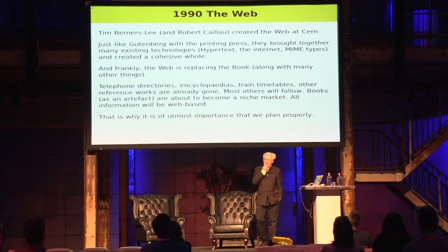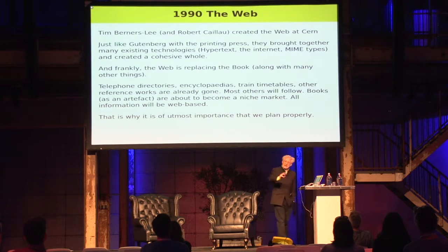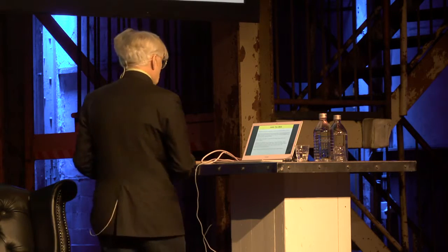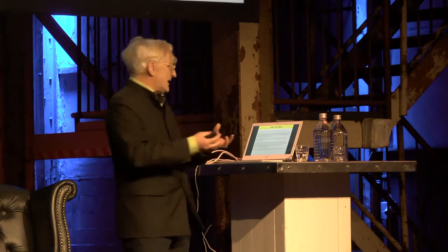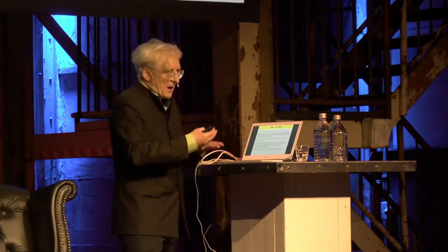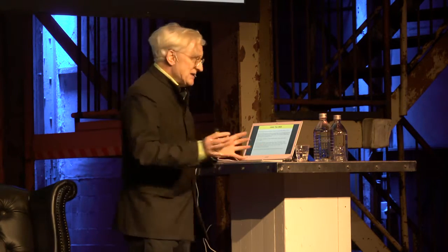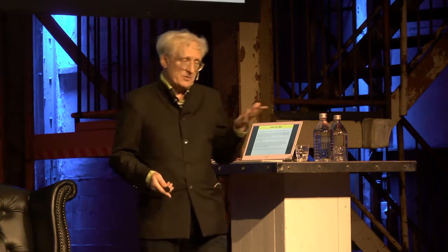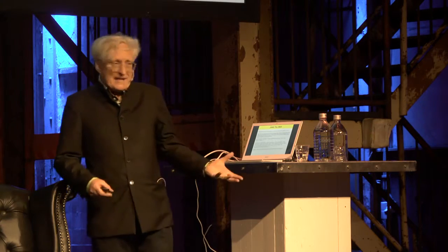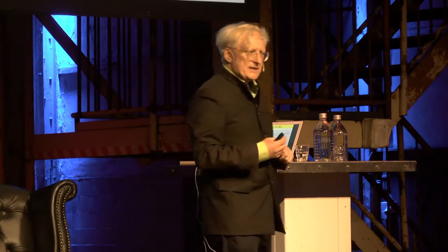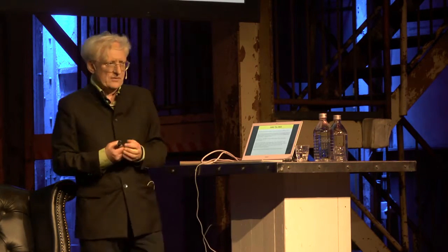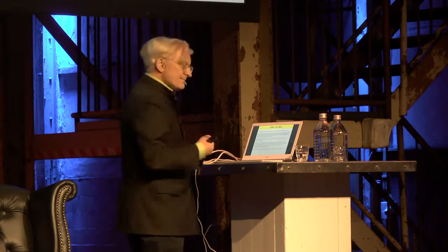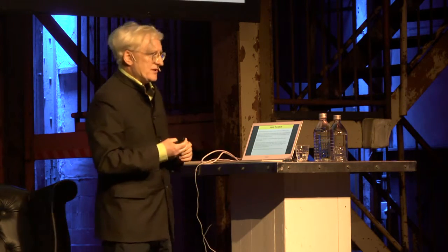In 1990, two years after the internet came to Europe, along came the web. Tim Berners-Lee at CERN — and Robert Caillou, who doesn't get as much press — the two of them built the web. Just like Gutenberg, they brought together lots of existing technologies: hypertext wasn't new, the internet wasn't new, MIME types weren't new. But they created a cohesive whole. They weren't the only ones trying, they were just the ones that won, partly because they did it for free. Since then there's been an explosion — millions of websites across the whole world — and the web is now replacing a lot of information sources we used to have in books.